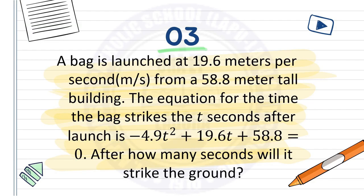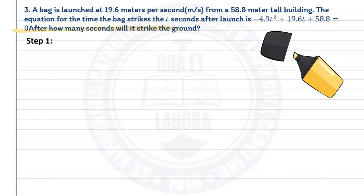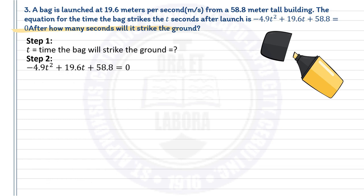Number 3: A bag is launched at 19.6 meters per second from a 58.8-meter tall building. The equation for the time the bag strikes the ground is negative 4.9t squared plus 19.6t plus 58.8 equals 0. After how many seconds will it strike the ground? Step 1: t represents the time the bag will strike the ground — that is the unknown. Step 2: The equation is negative 4.9t squared plus 19.6t plus 58.8 equals 0.